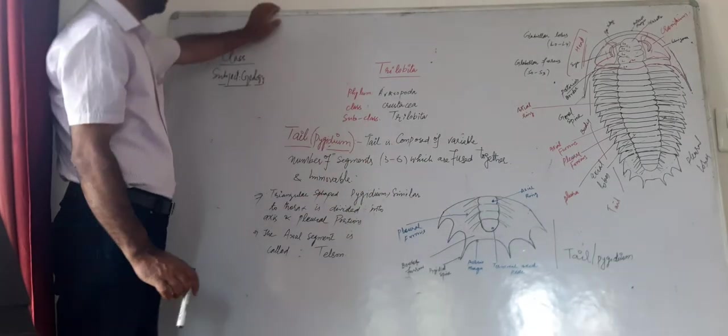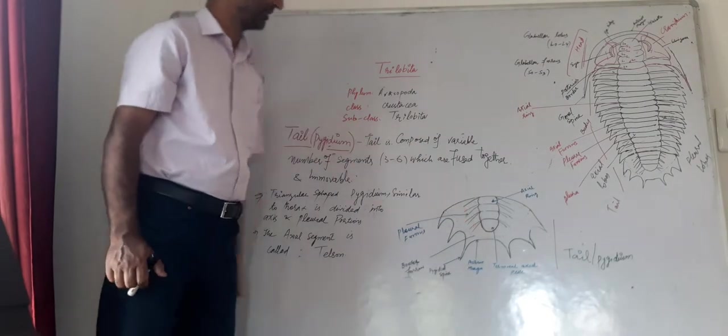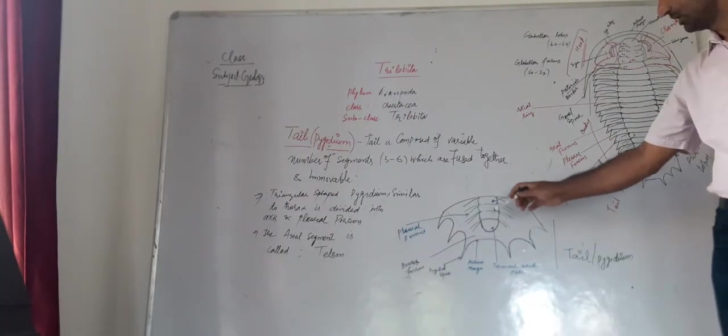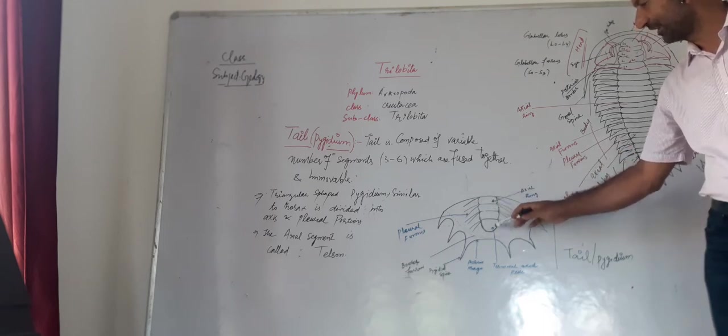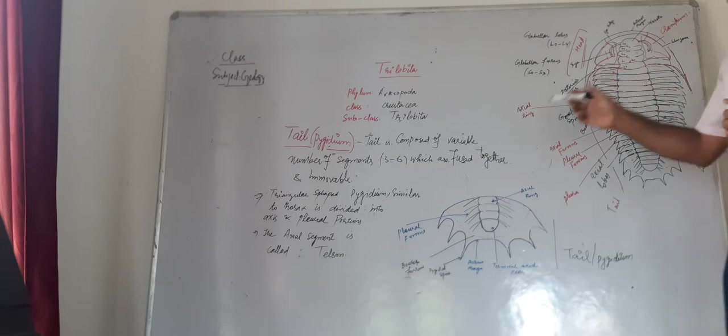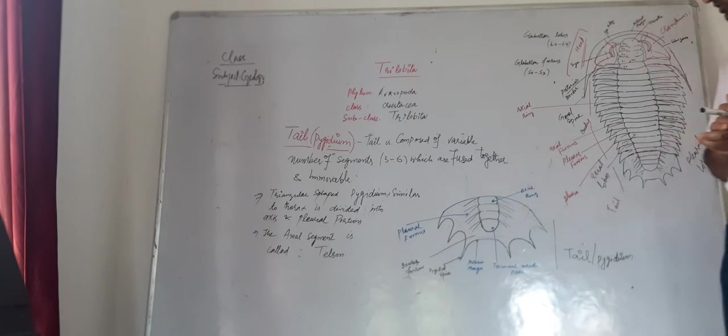Tail is composed of variable number of segments. As you have seen in the body, number of segments also, this tail represents this number of segments. They can be from three to six. So the tail of a trilobite can be composed of a minimum number of three segments and maximum six. It depends upon the animals. Some animals have three segments, some have four, some five or some six.